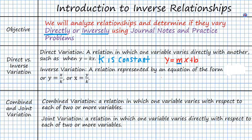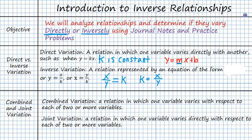Inverse variation is a relation represented by the equation of the form y is equal to x divided by k, or x is equal to y divided by k. This means that your x and your y are going to kind of flip-flop. If we get k by itself, we'll see something like x over y is equal to k. You might also have it in the form x is equal to k divided by y, or y is equal to k divided by x. Those are all examples of inverse variation.